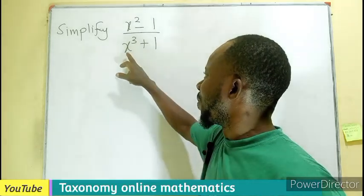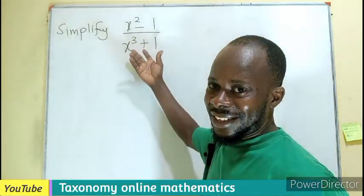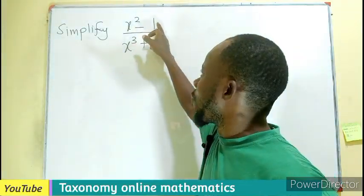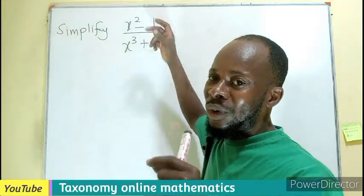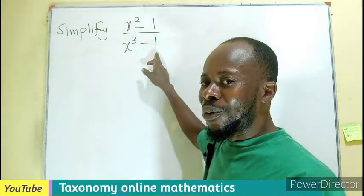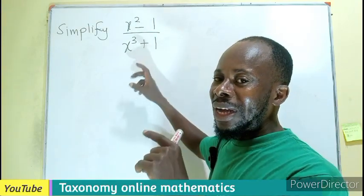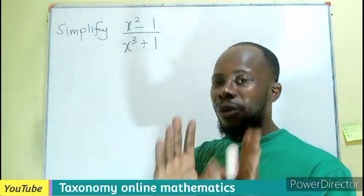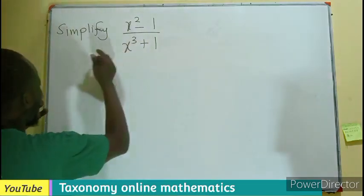So we are going to manipulate it. Looking at the numerator, 1 squared still remains 1, so we can get a difference of 2 squared. Then 1 cubed will remain 1, so this will also become the difference of a cubed.